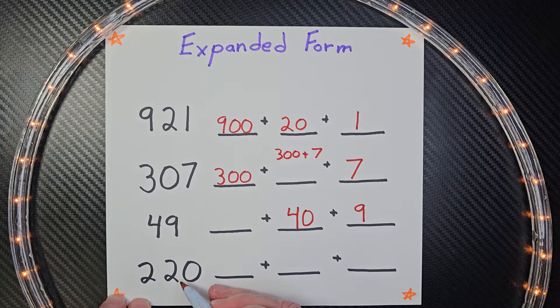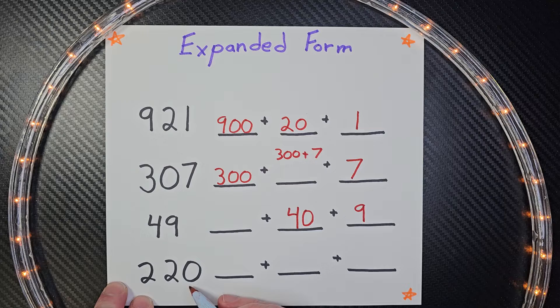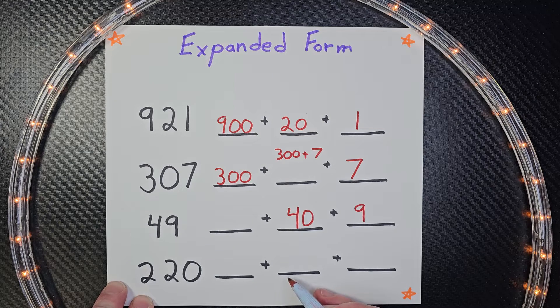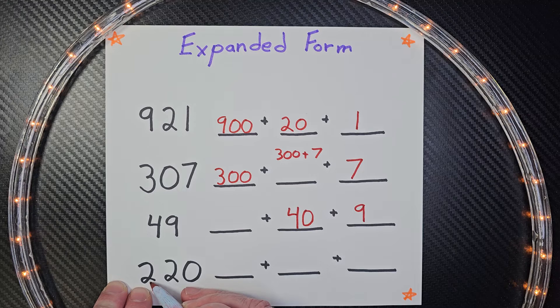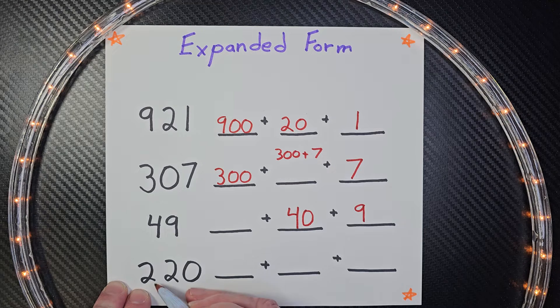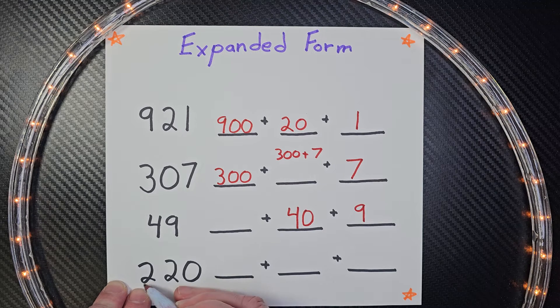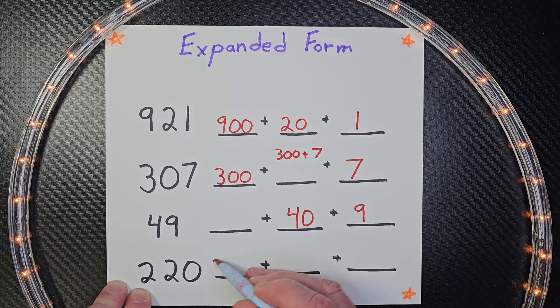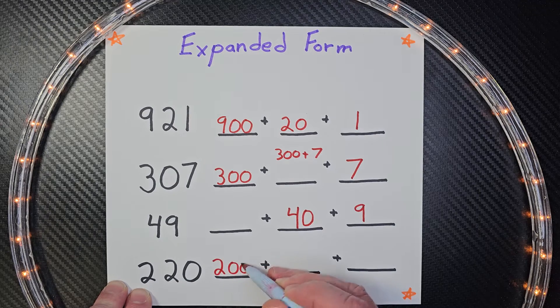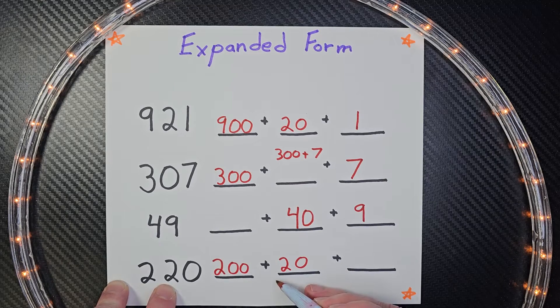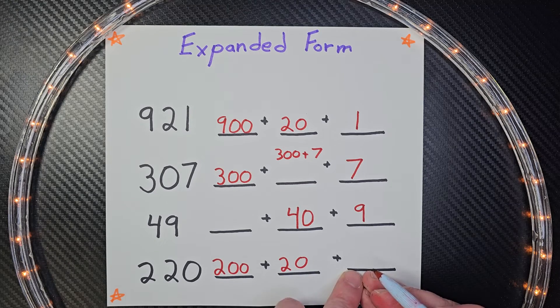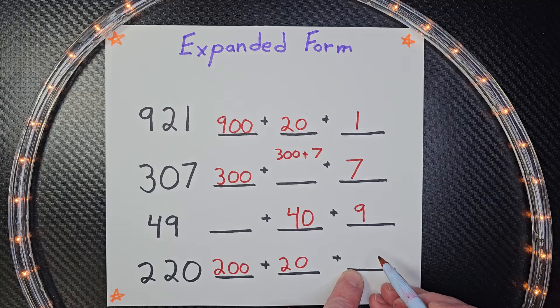All right, let's go on to our next number here. This is 220. We're going to write it in expanded form. We start from the left. The 2 is in the hundreds place. So you would say it like 200. The next 2 is in the tens place, so that's 20. We don't have one in the ones place. We just leave it blank.